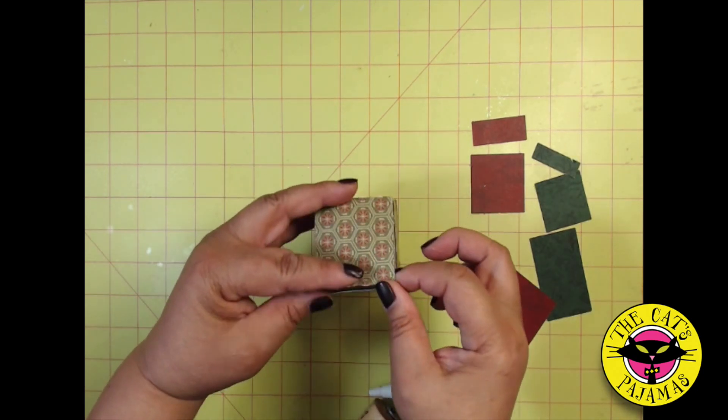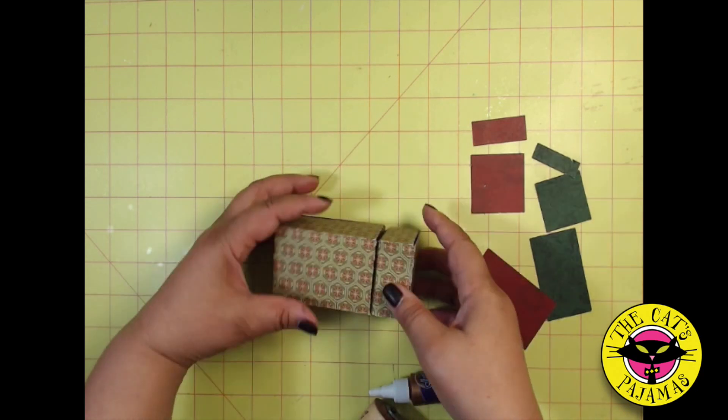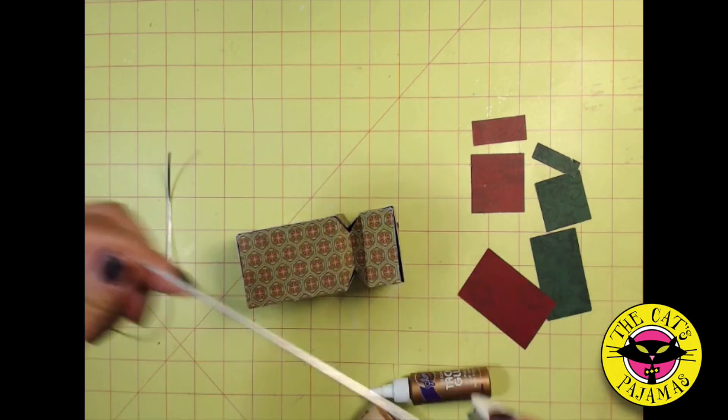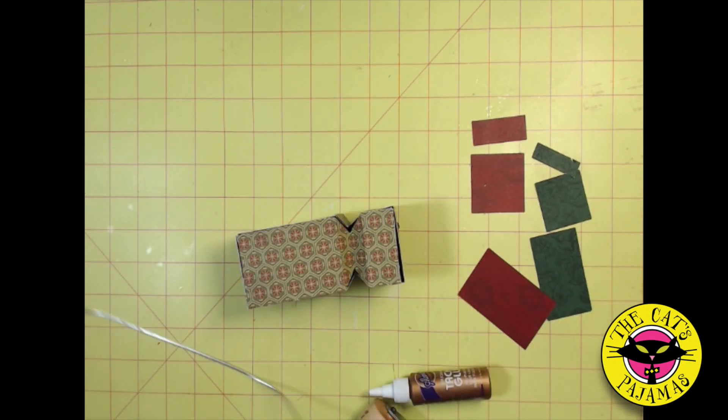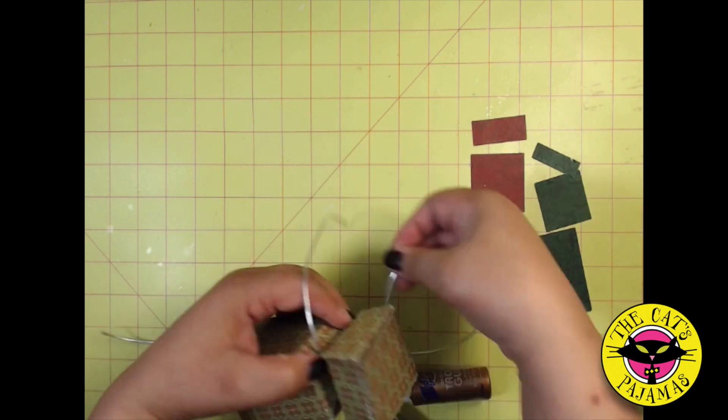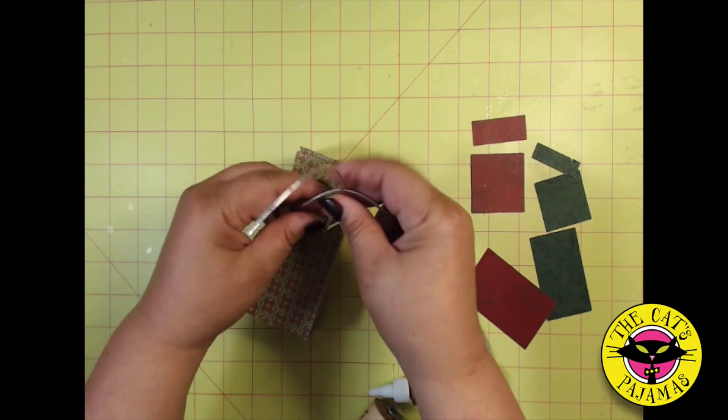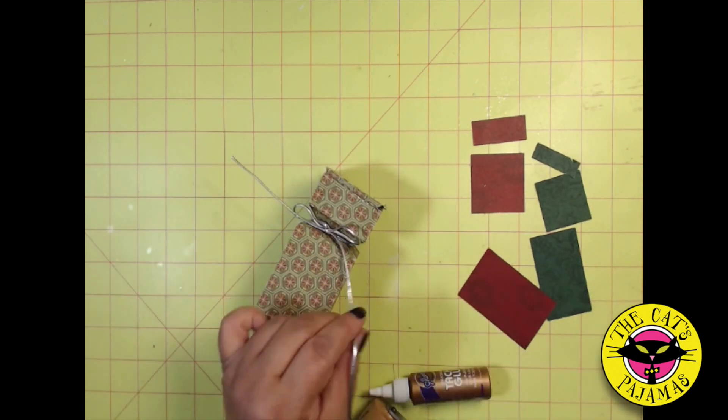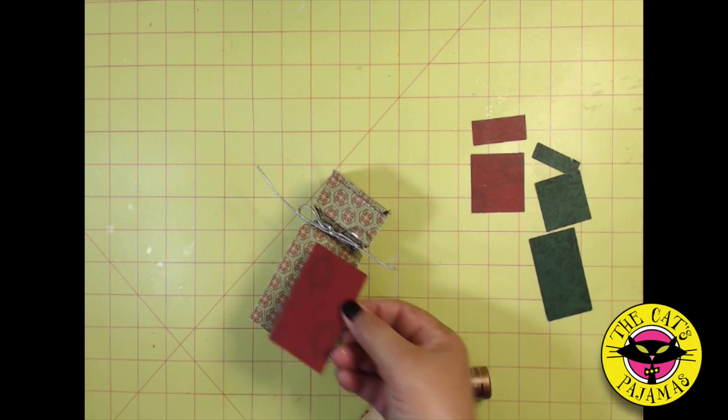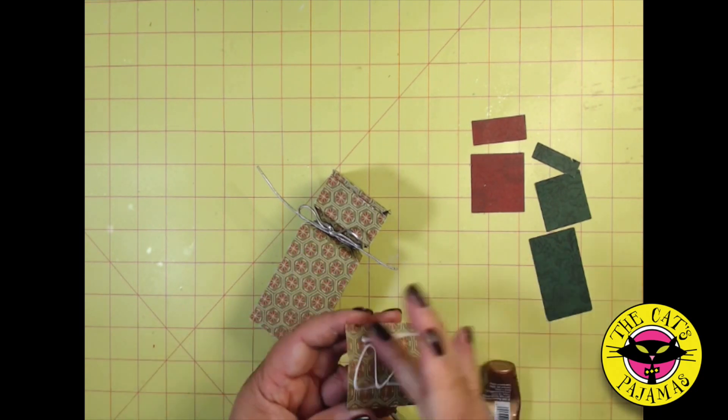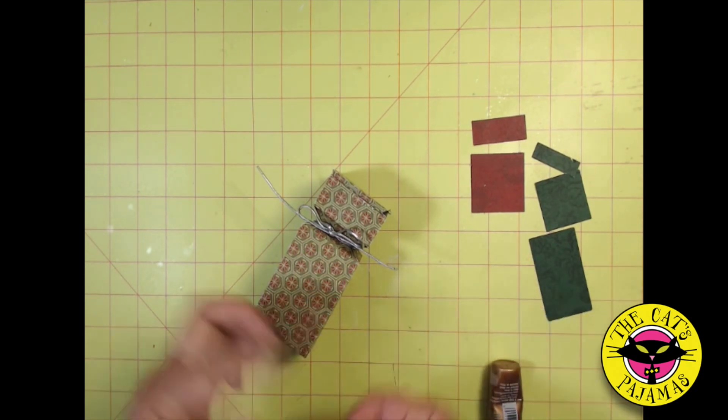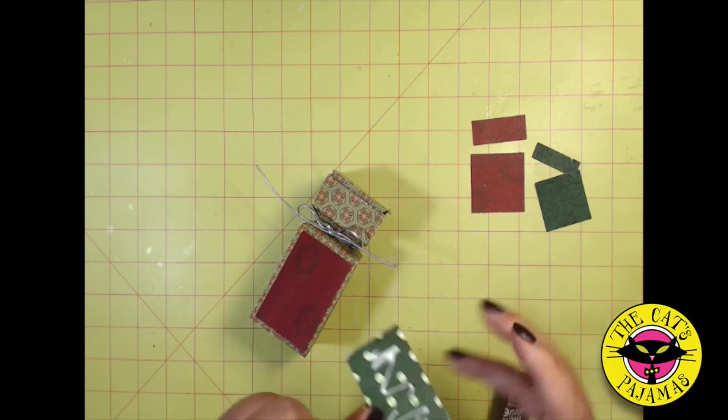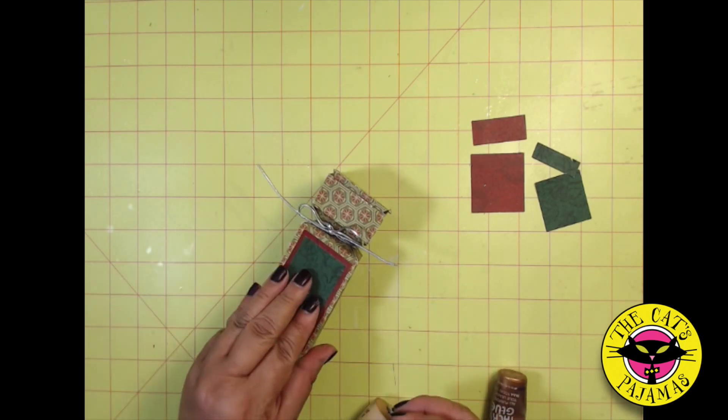Now we're going to add a little bit of silver cord, just to make it festive. Now I'm going to add mats to the front, the top front, and the top of the box.